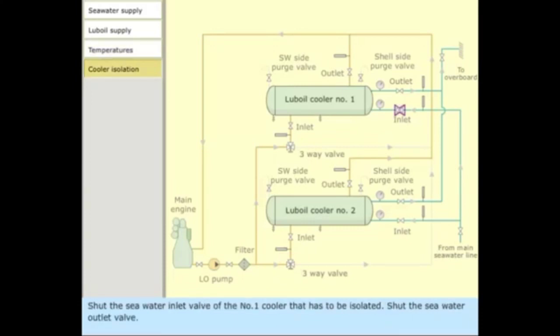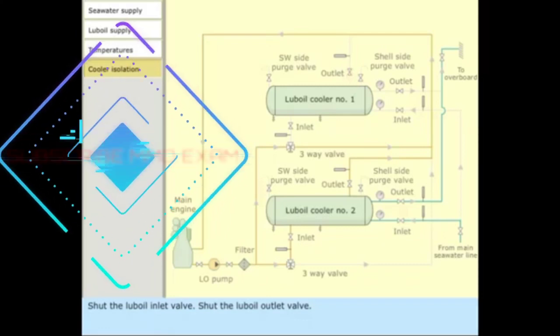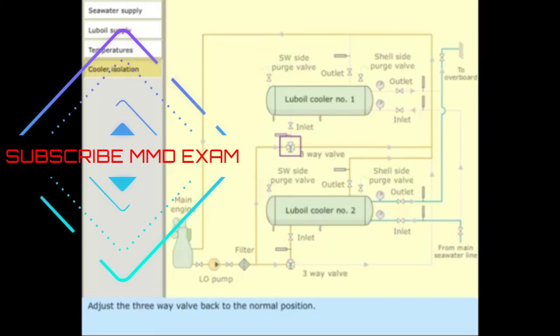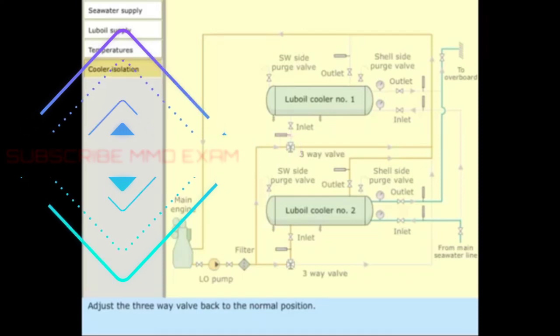Shut the sea water inlet valve of the number 1 cooler that has to be isolated. Shut the sea water outlet valve. Divert the lube oil flow by adjusting the 3-way valve. Shut the lube oil inlet valve. Shut the lube oil outlet valve. Adjust the 3-way valve back to the normal position.